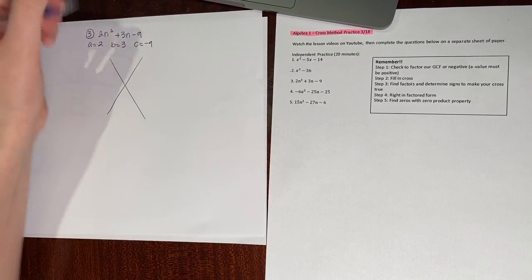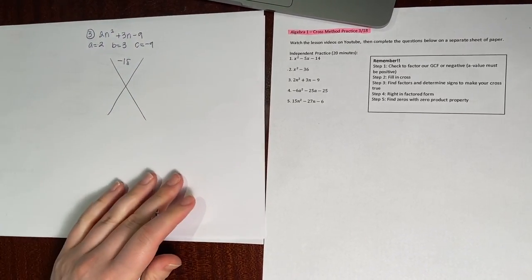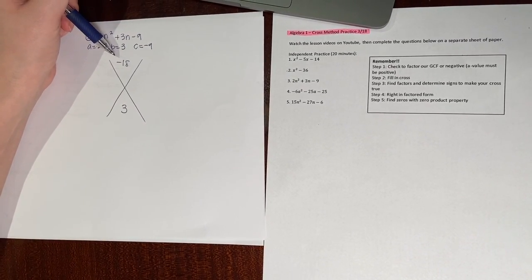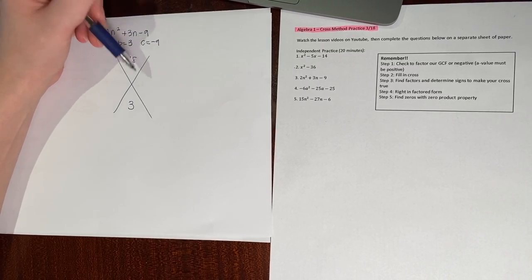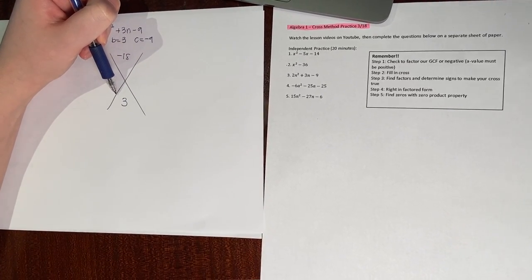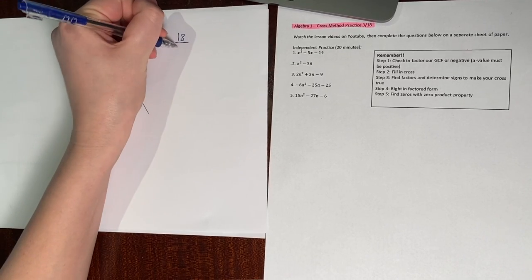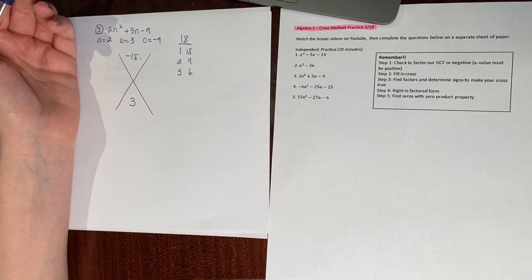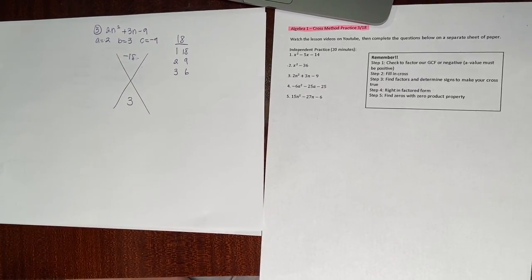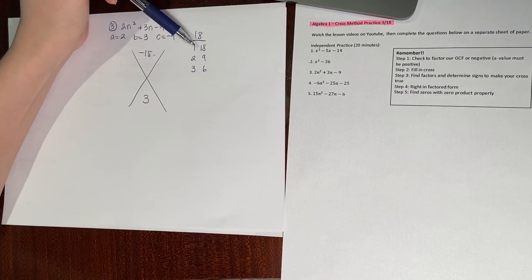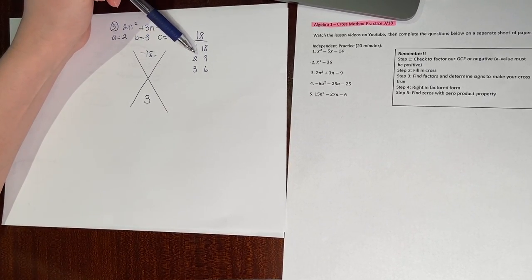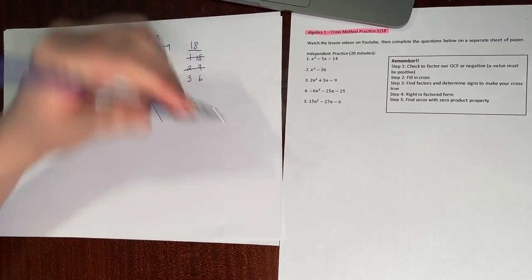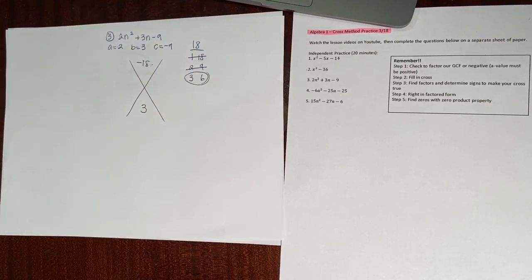A times c: 2 times negative 9 gives me negative 18. B value is positive 3. I'm looking for all ways I can multiply to get negative 18 that I can also add or subtract to get 3. Factor pairs: 1 and 18, 2 and 9, 3 and 6. No way from 1 and 18 will I get to 3. No way between 2 and 9 will I get to 3. So 3 and 6 has to be my factor pair.